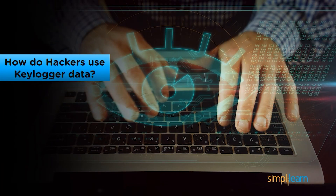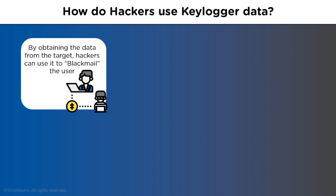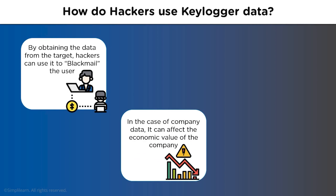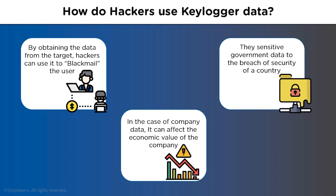Now let's look at how hackers differentiate and exploit different types of recorded data. When hackers receive information about a target, they may use it to blackmail the target, affecting personal life or demanding money. Recorded company data can affect the economic value of a company in the market, potentially leading to its downfall. In some cases, key logging programs can also log military secrets, including nuclear codes or security protocols necessary to maintain a country's security.